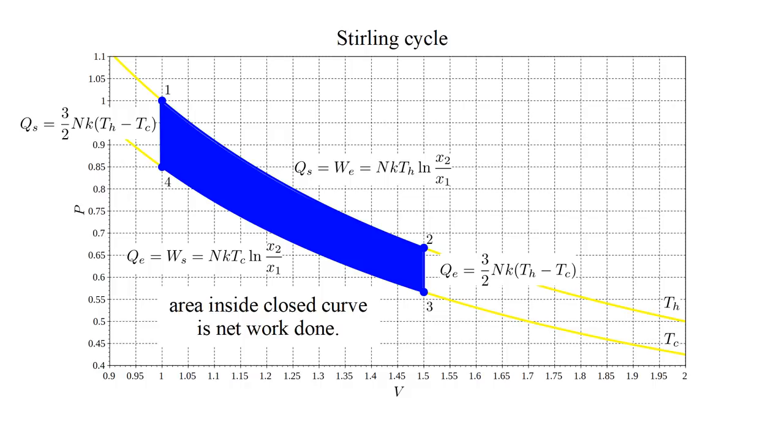The area under the curve between states 1 and 2 is the work done on the environment. The area under the curve between states 3 and 4 is the work done on the system. The difference is the area between the curves, and this represents the net work produced by the engine.